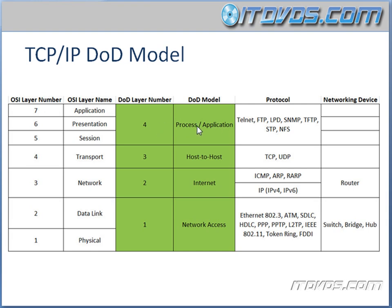Some of the protocols at these different layers: layer 4 of the DOD model, the Process/Application layer, includes Telnet, FTP, LPD, SNMP, TFTP, STP, and NFS. Layer 3 — the Host-to-Host layer, same as the transport layer — includes TCP and UDP.